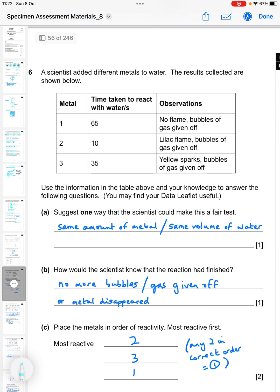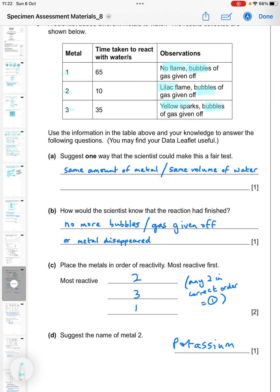Question six: a scientist added different metals to water. The results collected are shown below. Use the information and your knowledge to answer the following questions, and again you may find your data leaflet useful so open the flipping thing and use it. Suggest one way that the scientists could make this a fair test. Well, fair test is about keeping things the same, so the same amount of metal or the same volume of water, either of those.